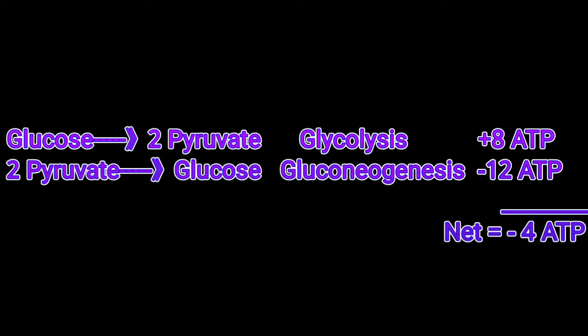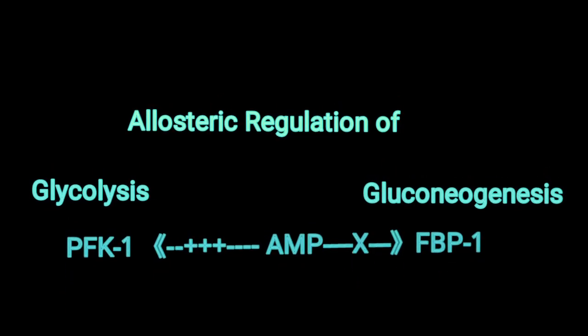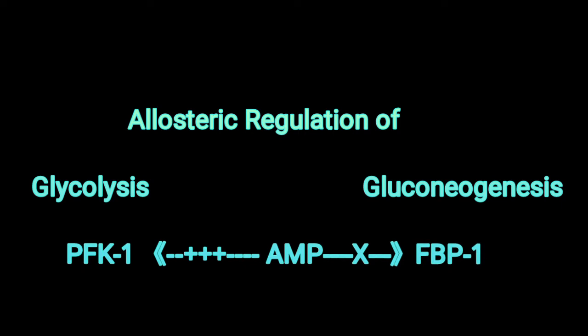To prevent such a futile cycle from occurring, both glycolysis and gluconeogenesis are tightly regulated by several regulators, including hormones, covalent modification of specific enzymes, and allosteric regulation of specific enzymes. This tight regulation ensures that these two pathways are highly unlikely to occur at the same time. The focus today is on the regulation of both pathways by allosteric regulators.